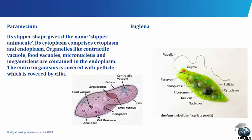The Euglena, as shown in the picture, has a flagellum for locomotion, the stigma, the pellicle, the cytoplasm, the reservoir, the chloroplasts, the ribosomes, the nucleus and nucleolus.